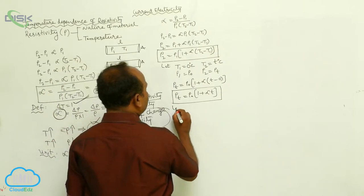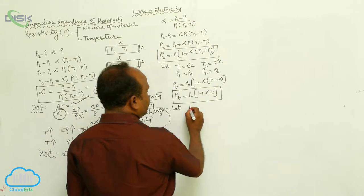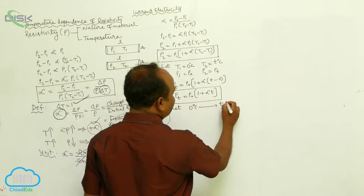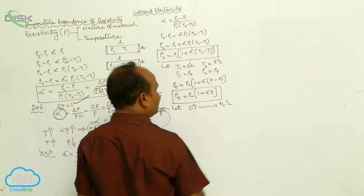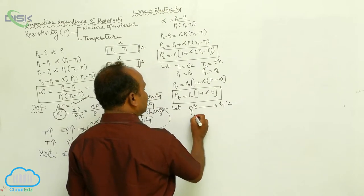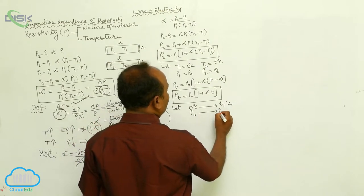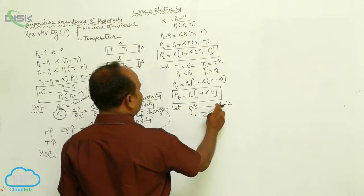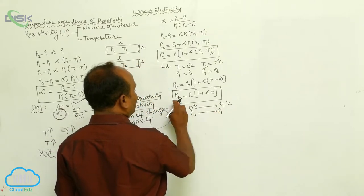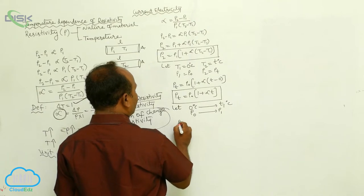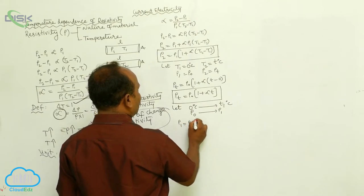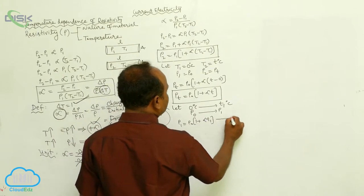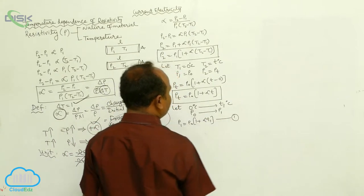Now let us consider temperature increased from 0 to T₁ degrees centigrade. Then resistivity is increased from ρ₀ to ρ₁. Therefore, ρT at T₁°C is ρ₁. So ρ₁ = ρ₀ × (1 + αT₁). This is called the first equation.